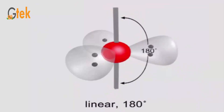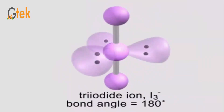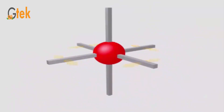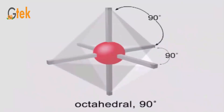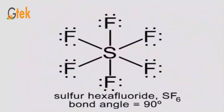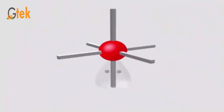With more lone pairs of electrons, the linear arrangement of 180 degrees results in a different geometry. The typical example is the triiodide ion, with a bond angle of 180 degrees. Now we will talk about octahedral arrangements — with a bond angle of 90 degrees among all elements. The typical example is sulfur hexafluoride, SF6, with a 90 degree bond angle.